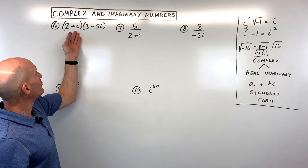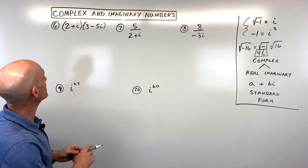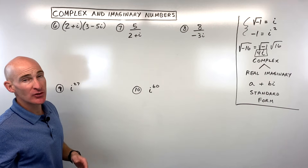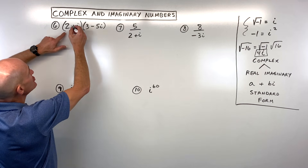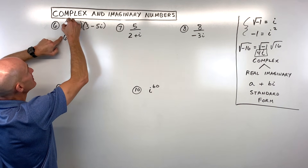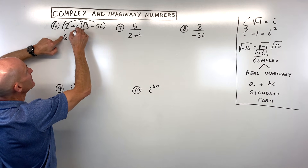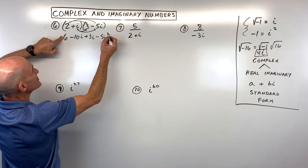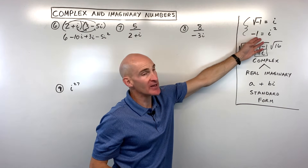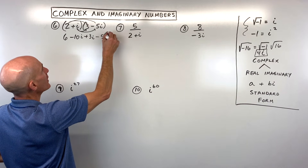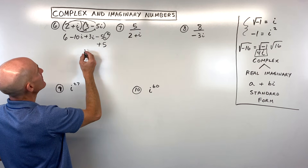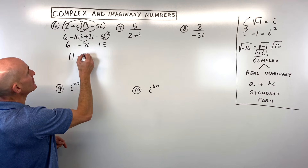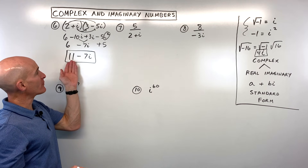For example six, we're multiplying two complex numbers side by side. Think of i as a variable, so we have a binomial times a binomial — we can use the FOIL method, box method, or distribute twice. Distributing: two times three is six, two times negative five i is negative ten i, then i times three is three i, and i times negative five i is negative five i squared. Since i squared equals negative one, negative five times negative one is positive five. Combining like terms: negative ten i plus three i is negative seven i, and six plus five is eleven. So the answer is eleven minus seven i in standard form.